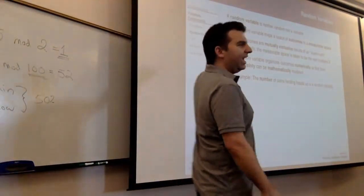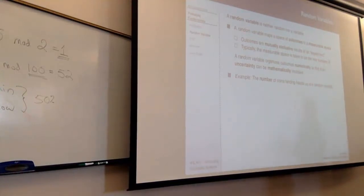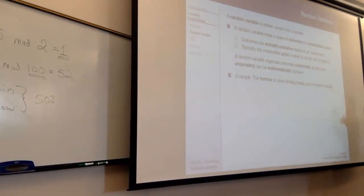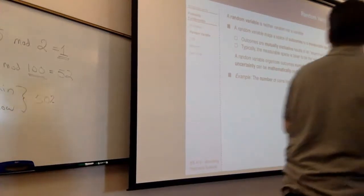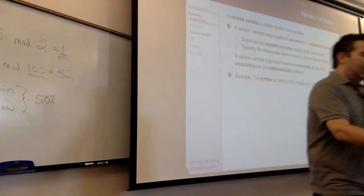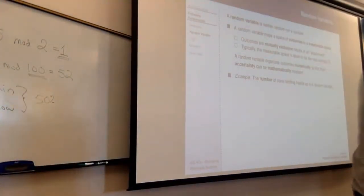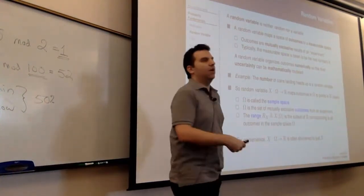Let's define a couple of things. A random variable is neither random nor a variable — it's an unfortunate term. A random variable is a function that maps a set of outcomes in the real world to the real number line, something we can then do math on. Outcomes are mutually exclusive results of an experiment. As an example, if I've got five coins and throw them all up into the air, the outcome is the particular configuration they land in. But I numerically represent that as the number of heads that landed — I've mapped a real-world outcome to a particular number. That's what a random variable does: maps outcomes to points in the reals.